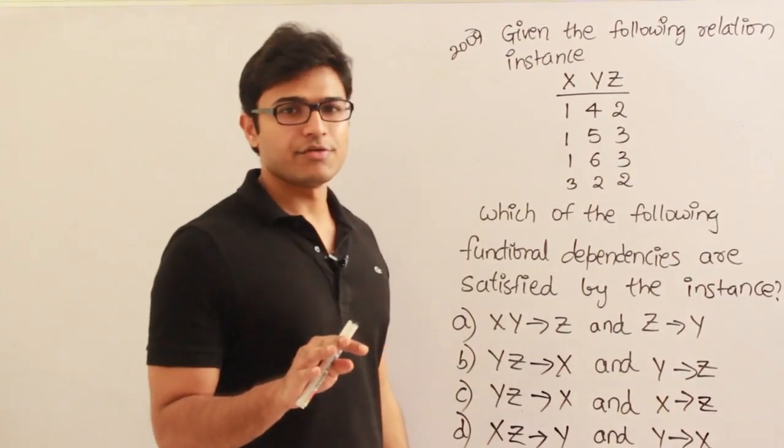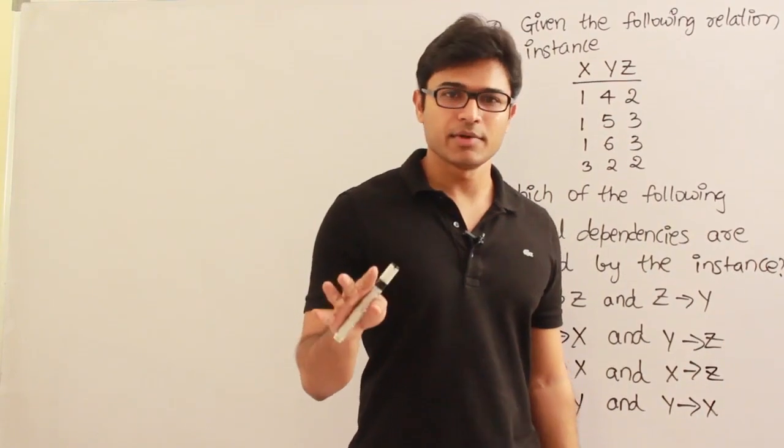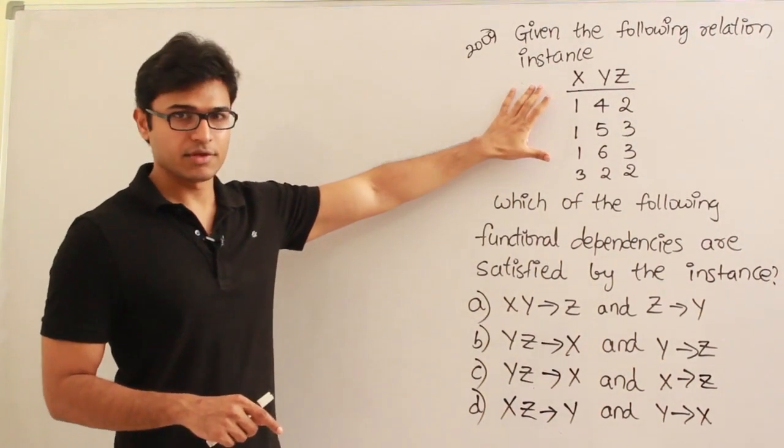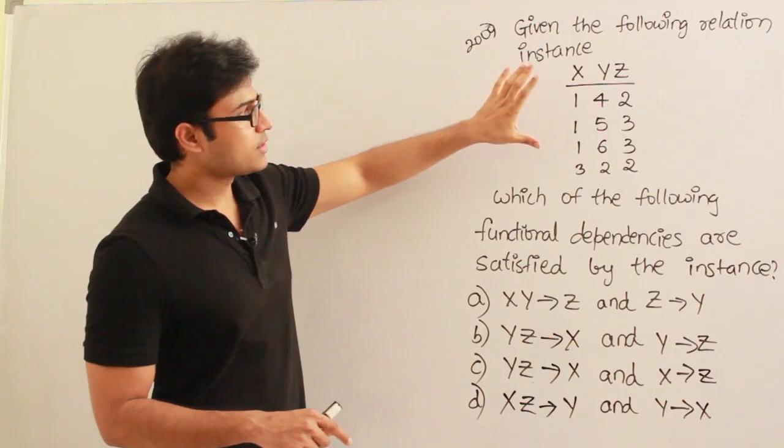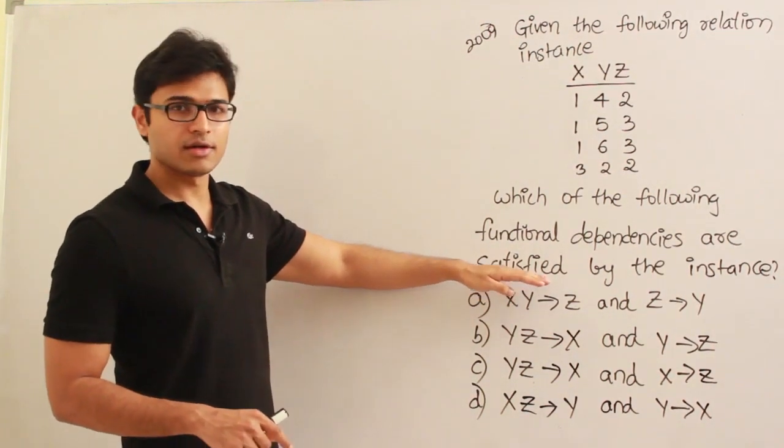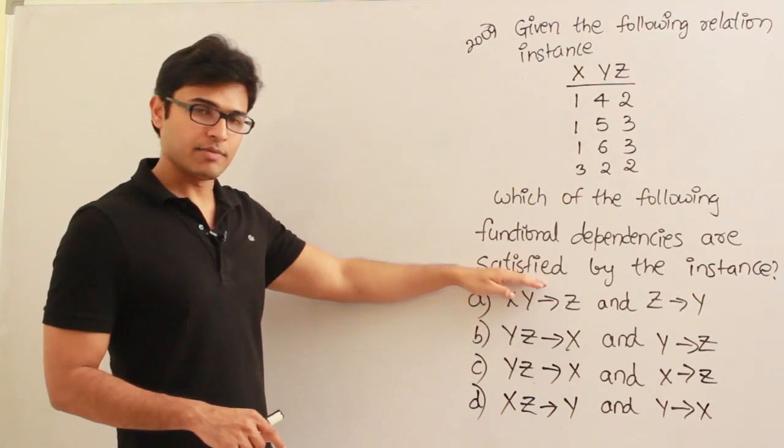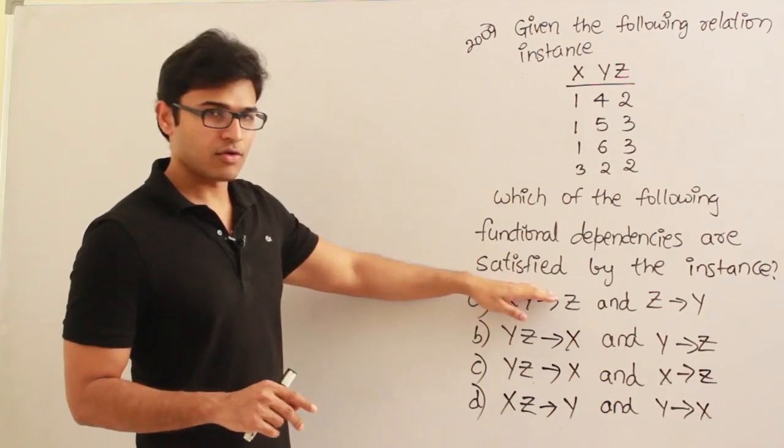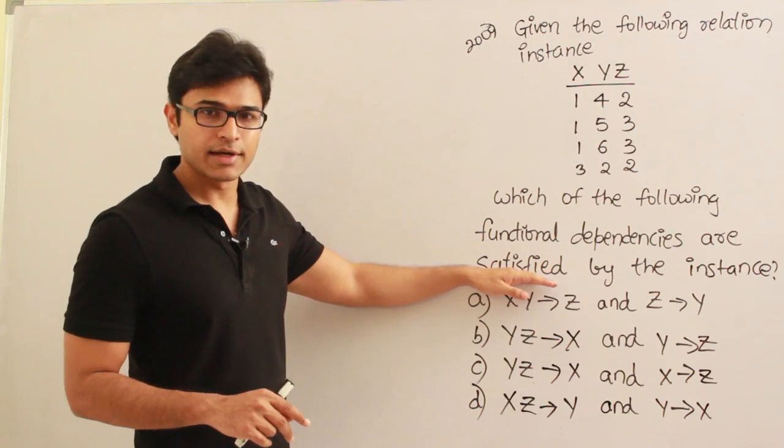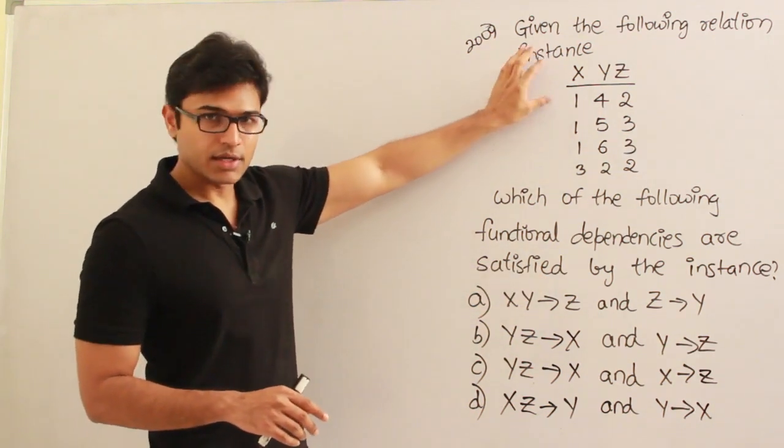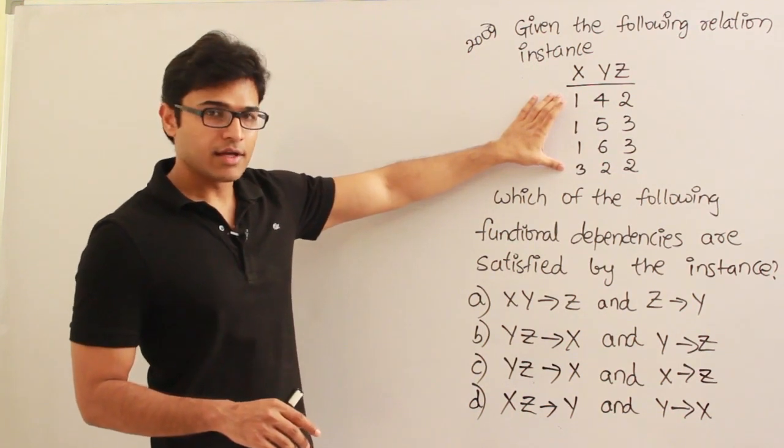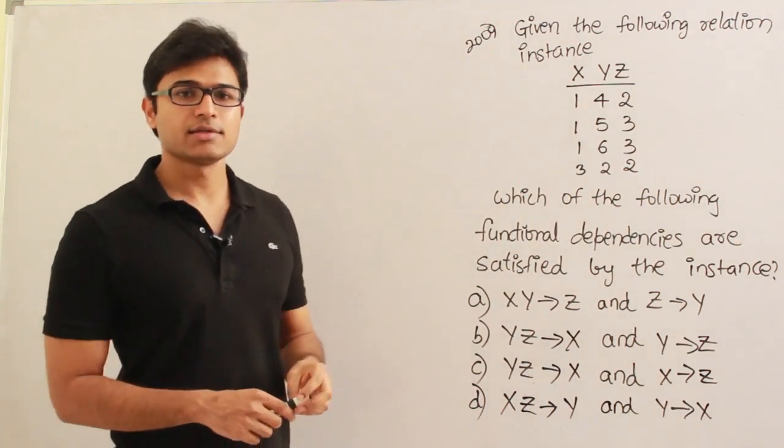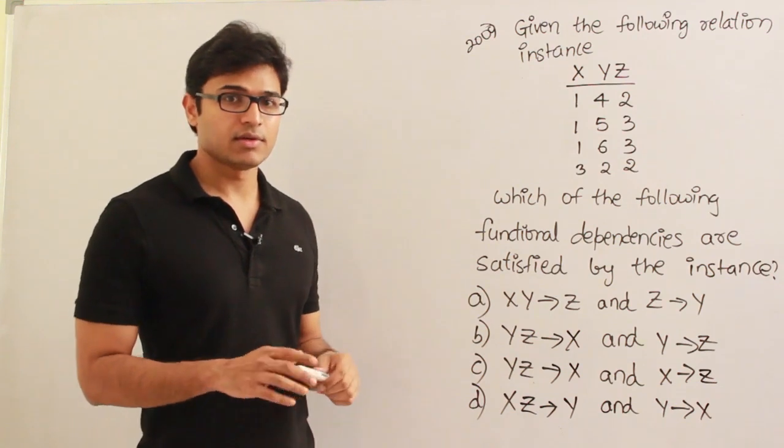They are not asking which of the following definitely holds on the database. They are saying which of the following is satisfied by this particular instance - that is the difference. Which means we are just interested in knowing whether these particular functional dependencies hold on this instance or not. We are not talking whether they hold forever or hold on all the relations in the database, only in this particular table, in this particular instance. They might not hold true if you try to add even more values into this. They are asking only for this particular instance, that's it. The wording is important, that is why I'm just stressing on it.